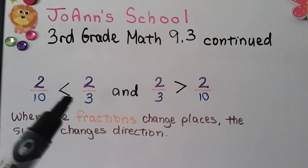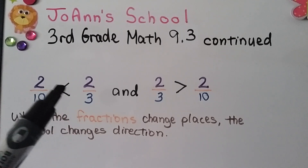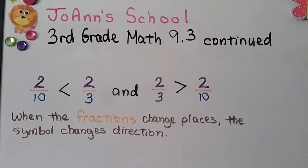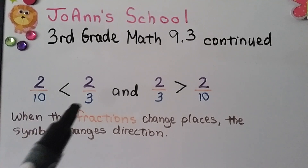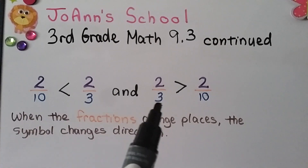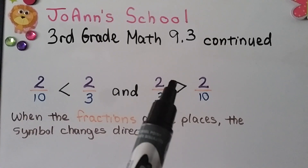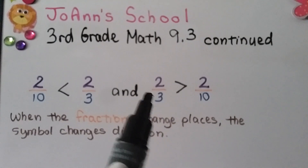We put our symbol with the big open part towards the bigger fraction. Two-tenths is less than two-thirds. If we switch the fractions and put two-thirds first, now the symbol goes the other direction.